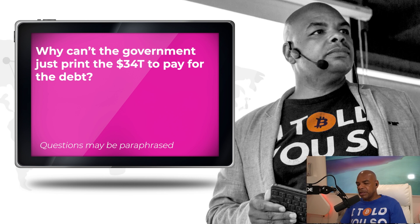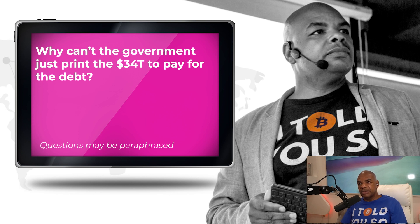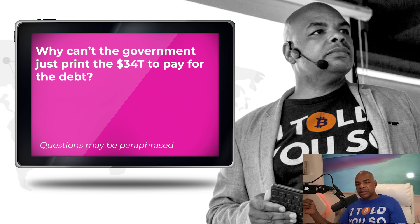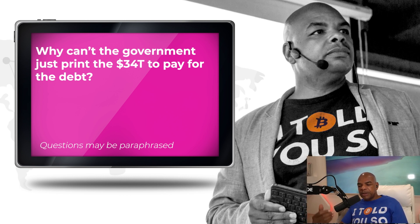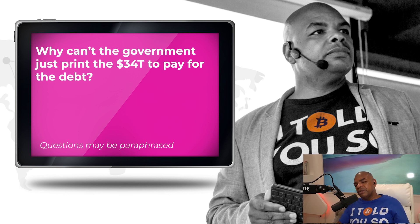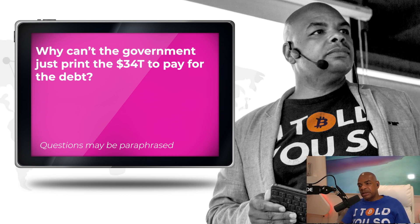When you say they could just print it off and pay the debt, you're not looking at it correctly. This is the money they're printing — they can make more anytime they want. The dollars you spend in the store, they can make as much as they want. People who save in treasuries — that's their money, because the US doesn't have to default and they get the interest payment on the debt.